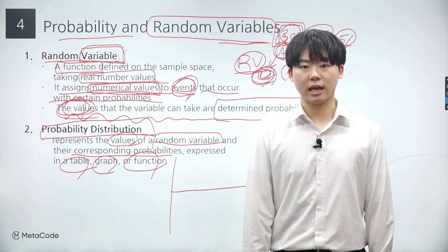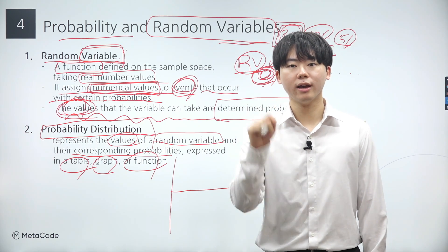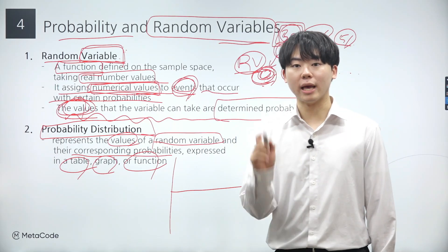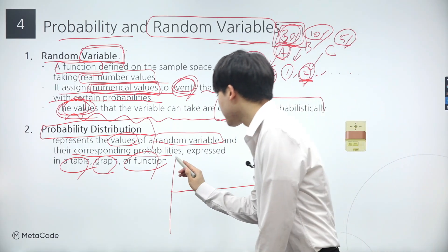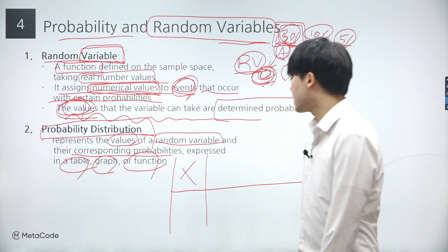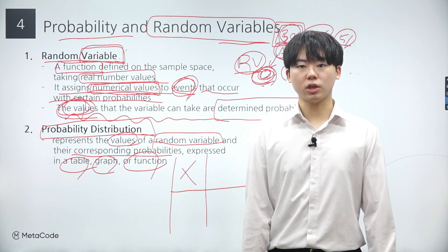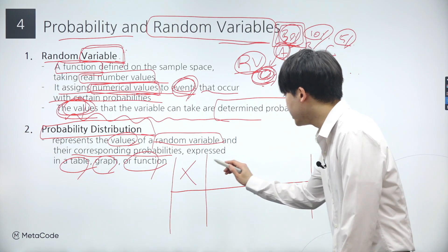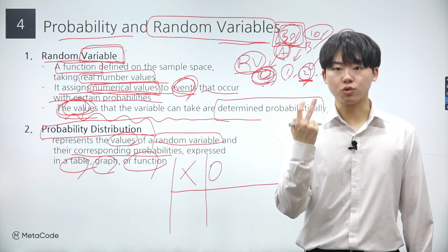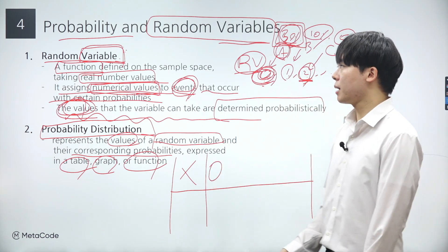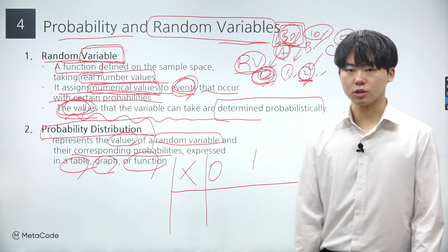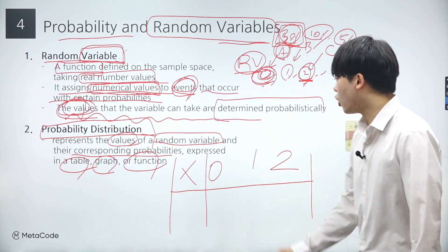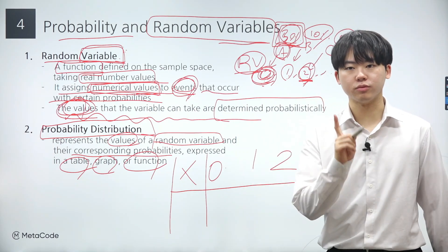Let's revisit the example of flipping a coin twice. We'll denote a random variable x as the number of times we get a head. Since x represents the count of heads, its possible values are 0 with no heads, 1 with only one head, and 2 with both flips resulting in heads. Each of these values corresponds to a specific event.